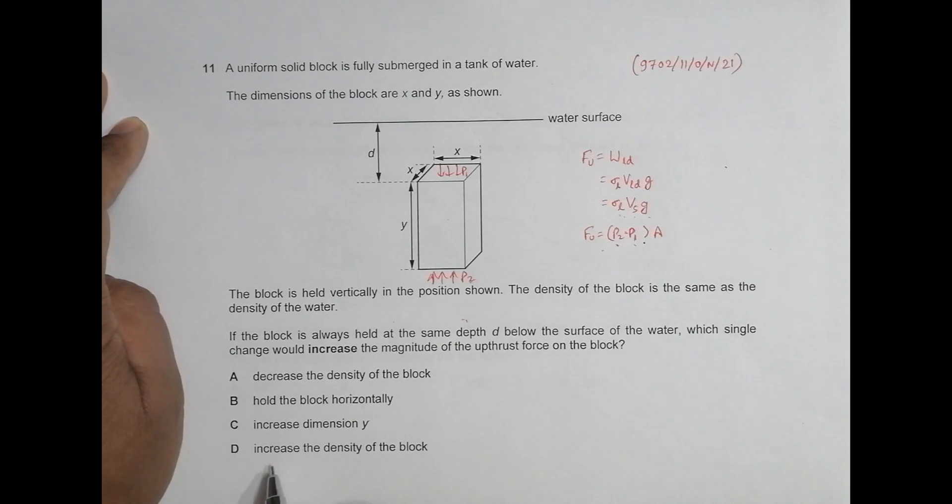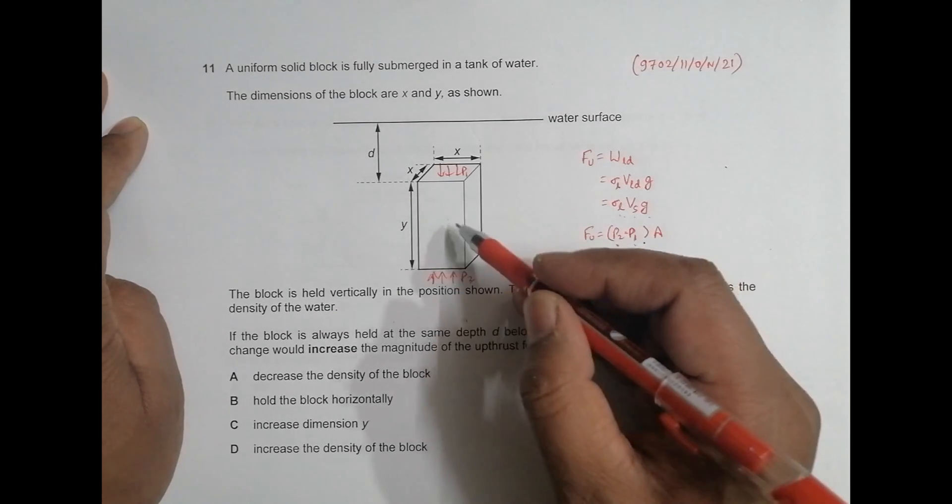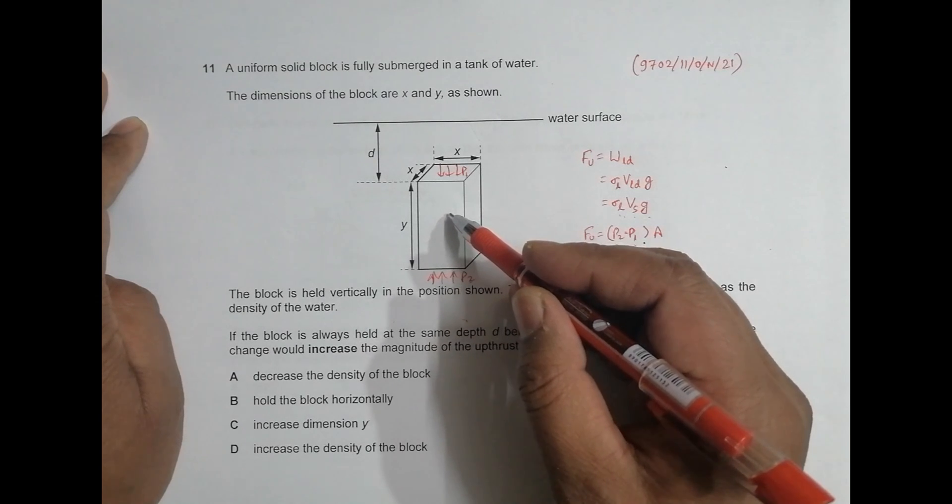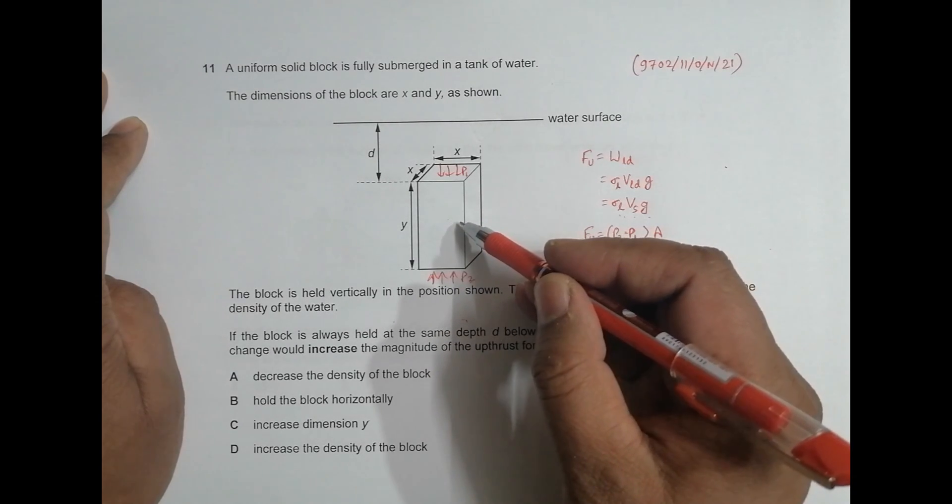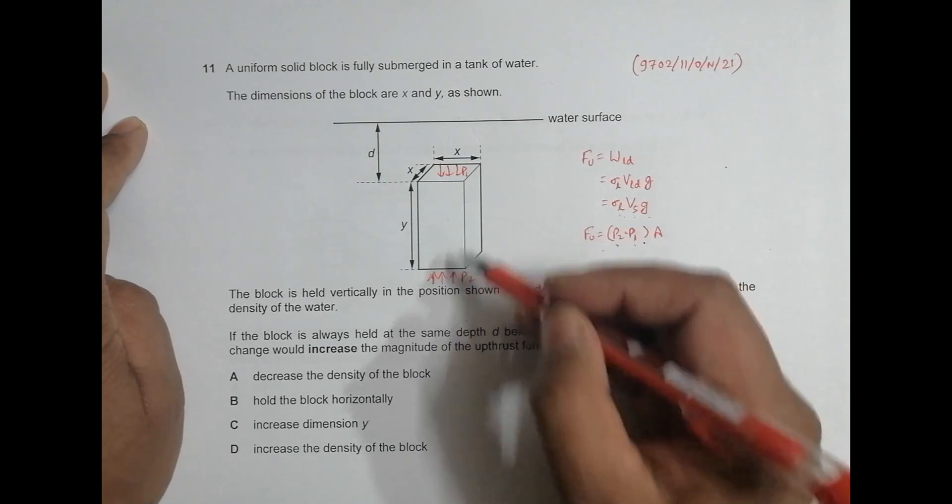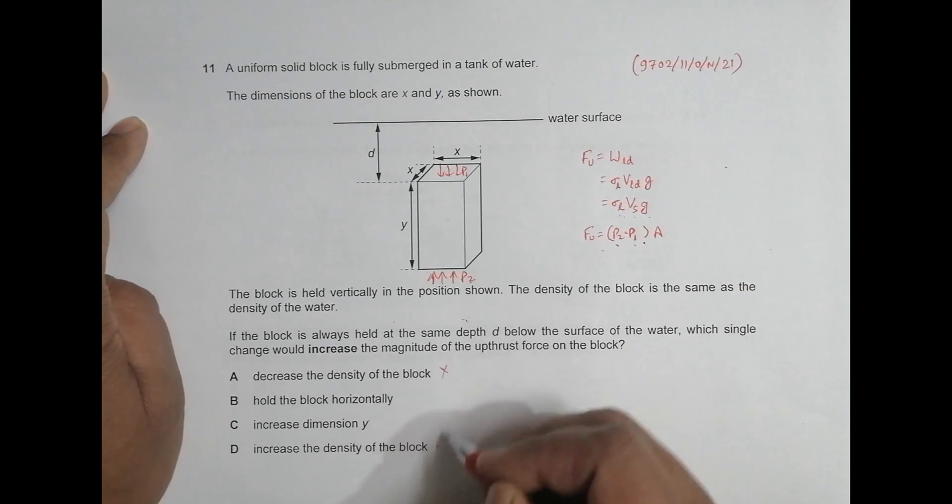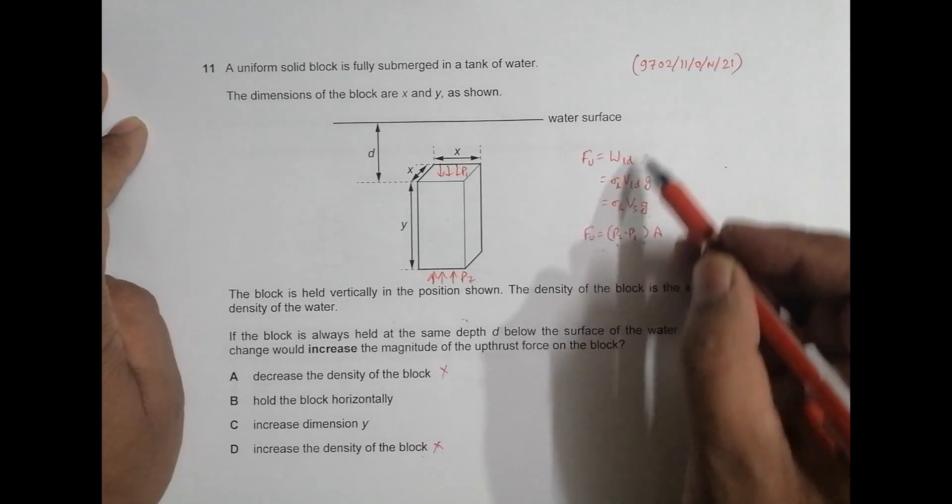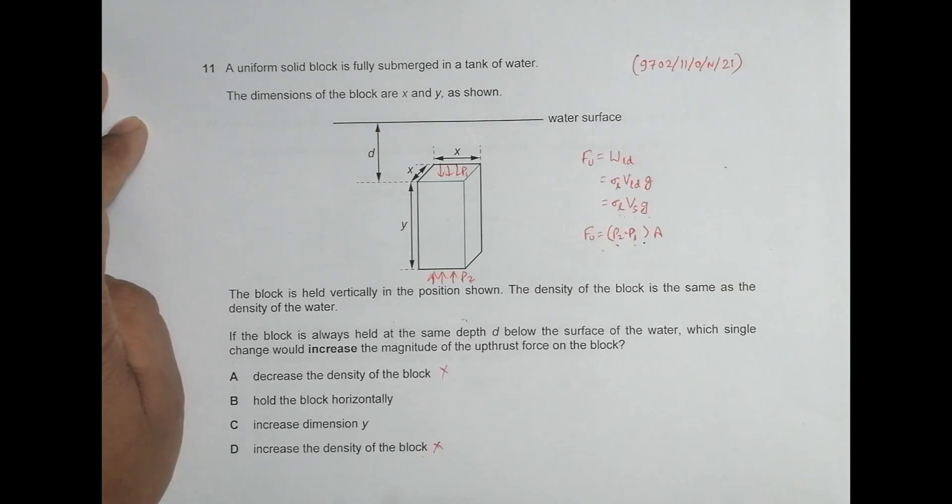Next is increase the density of the block. Again, of no use, because it's already submerged here. If I increase, it will even be more drowned. And also we are holding it tight there. That's why no difference, no use. And this density is never available here, never in the formula here.